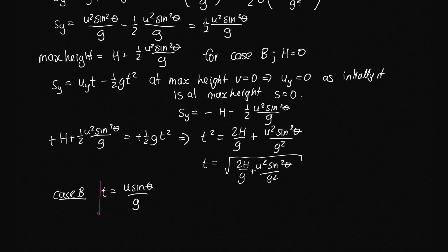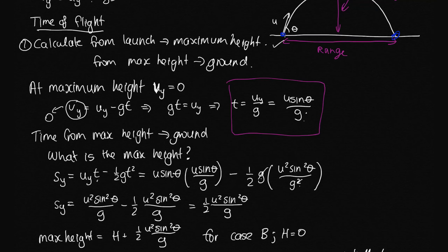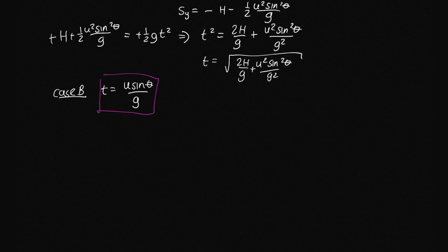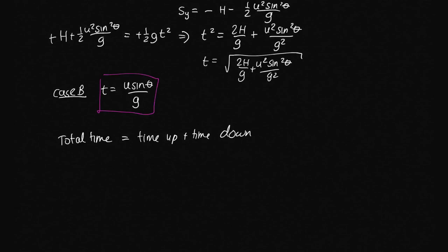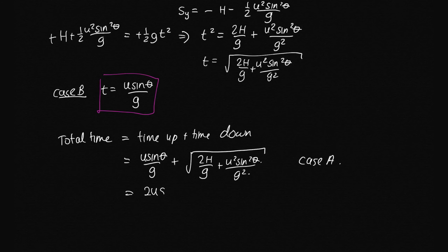For Case B, H equals zero, so the time down simplifies to U sine theta over G — the same as the time up, which makes sense because the motion is symmetric. The total time of flight is time up plus time down. For Case A, total T equals U sine theta over G plus the square root of 2H over G plus U squared sine squared theta over G squared. For Case B, total T equals 2U sine theta over G.